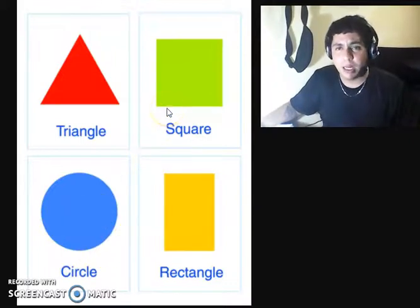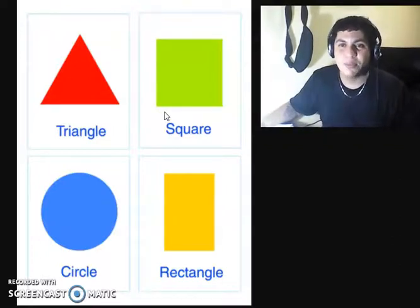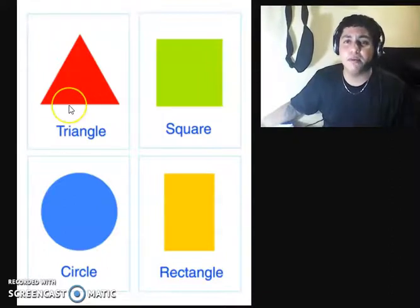Here we have a square, actually a green square. Repeat with me guys, square. Good job, you are doing so good guys. And now we are going to triangle again. This is a red triangle, you can you repeat again with me.